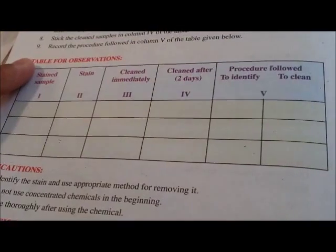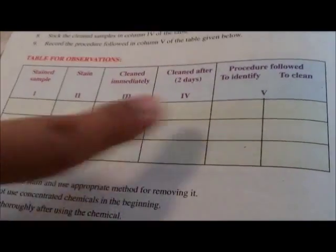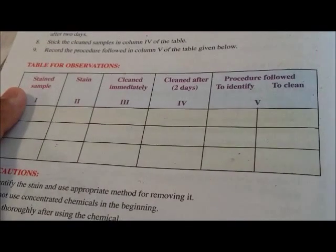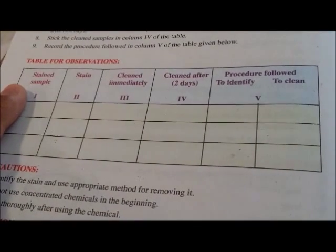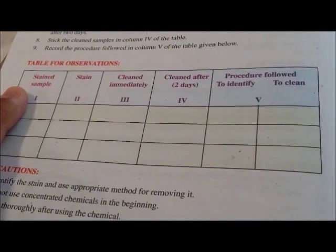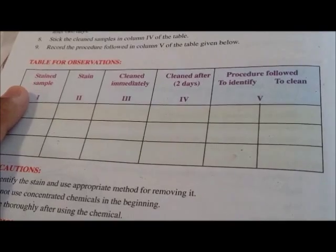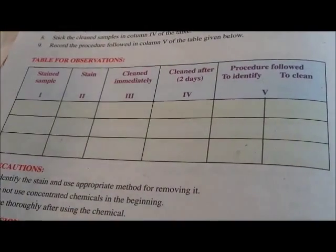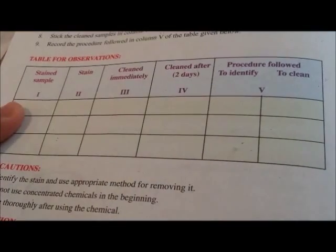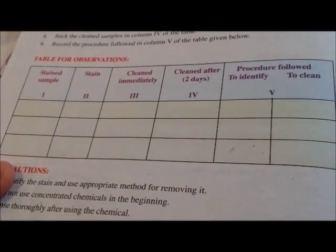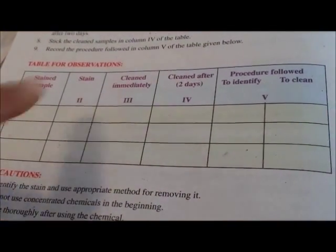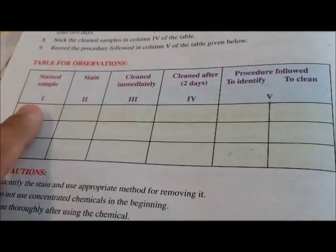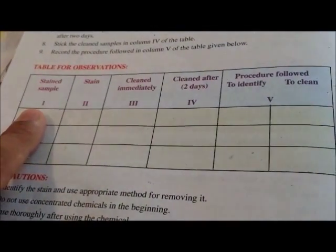As you can see, you have been given a table of observation where 5 columns have been given. The first column tells you to put a sample of your stained fabric. As you know in your procedure, you have to make 3 samples of the same stain so that one sample will be stuck in each column for the different samples. Number 2, this column identifies the stain — what type of stain is present on the sample.